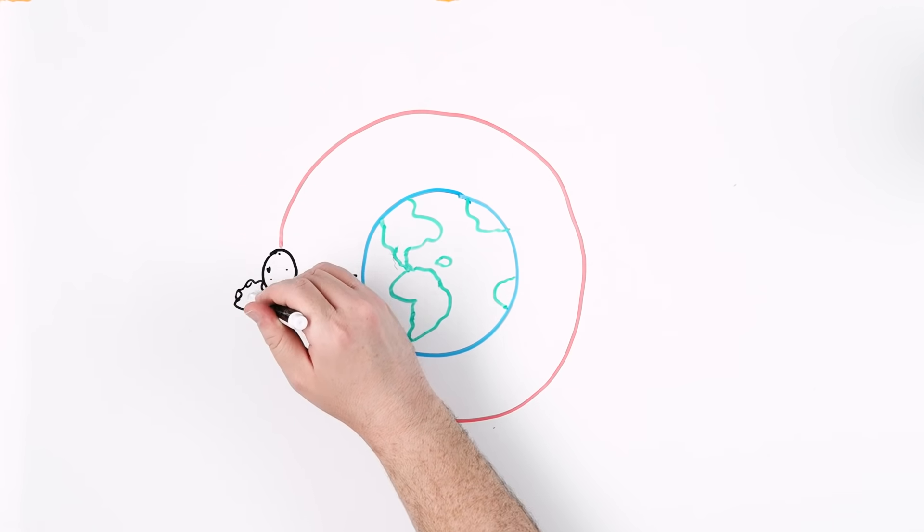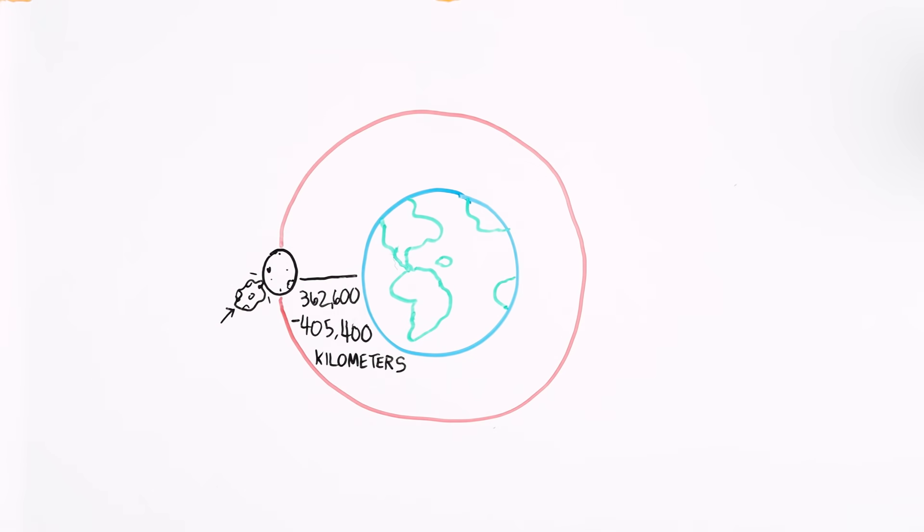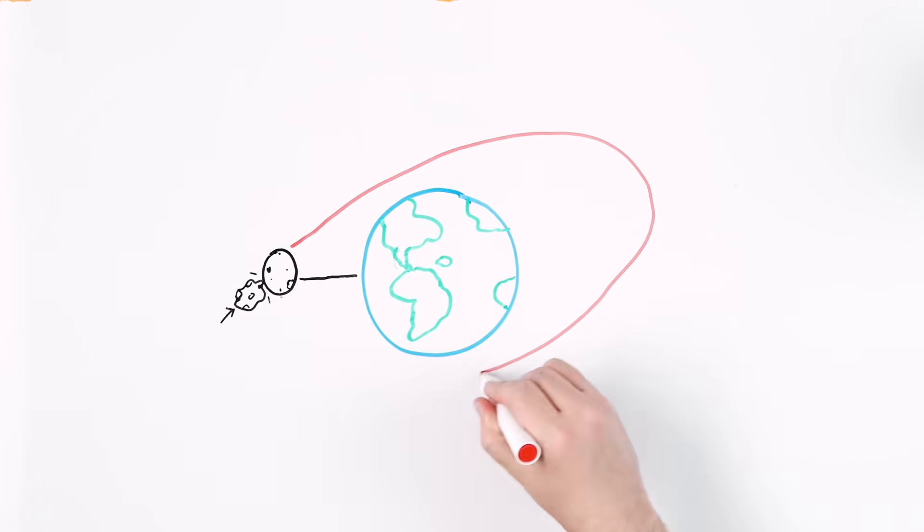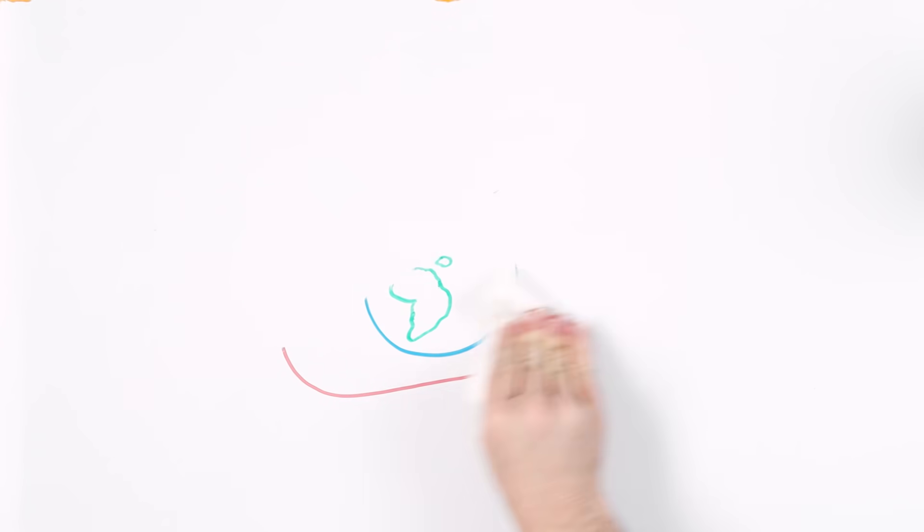But if it were to be knocked real hard by a massive space object, this could cause the moon's orbit to stretch out and become more and more elliptical as the force of the object slows it down.